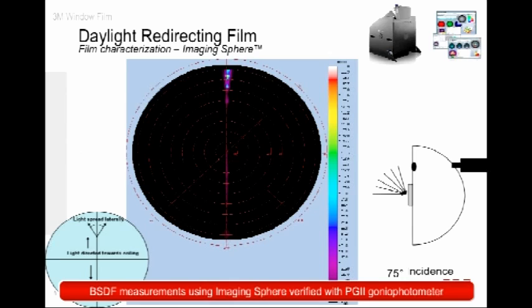For characterization, we used a commercial instrument called an imaging sphere. The film is placed into the machine and we bring light in from different angles. At normal incidence you can see how much light goes down; at 15 degrees the film starts working well, redirecting more light upward toward the ceiling. As the angle increases, more and more light goes up toward the ceiling, which is what we designed the prism to do — to most effectively redirect light onto the ceiling and then diffuse it down.